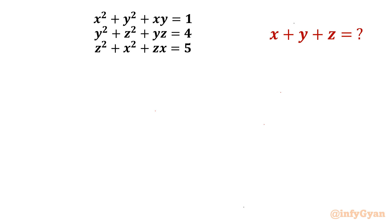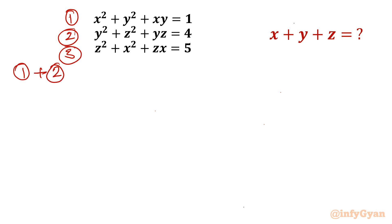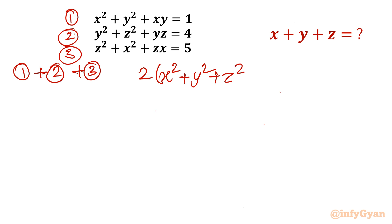Let me begin by considering the given equations as equation 1, 2, and 3. Simply add them — consider 1 plus 2 plus 3. Once I add, I will be writing 2x squared plus 2y squared plus 2z squared, so 2 times (x squared plus y squared plus z squared) plus xy plus yz plus zx equals 10.